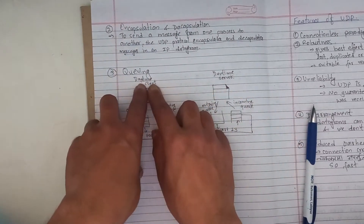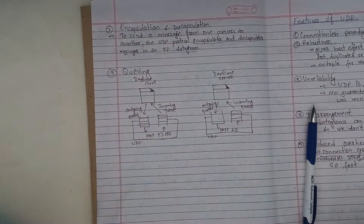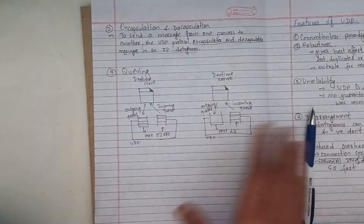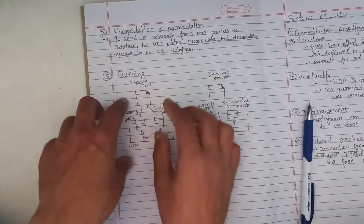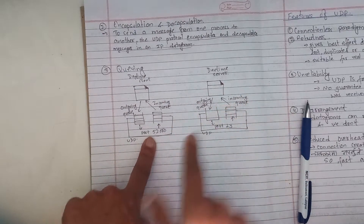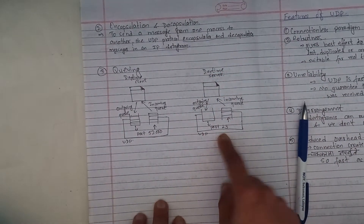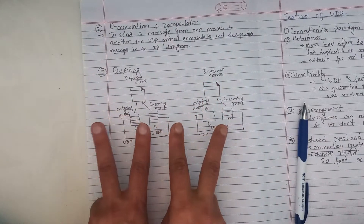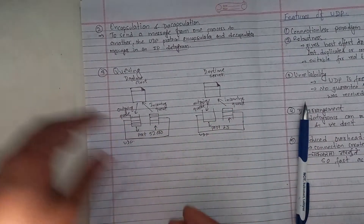Suppose I have two examples here: daytime client and daytime server. The daytime UDP port is 13. So what does this mean? In process-to-process communication, the server is well known. The client is assigned a port number — this particular client is assigned a UDP port number randomly. In the UDP server, the port number is well known. The daytime server has a fixed, well-known port. This is the UDP with an outgoing queue and an incoming queue, and a port number.